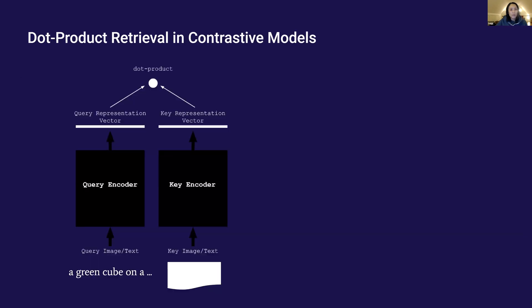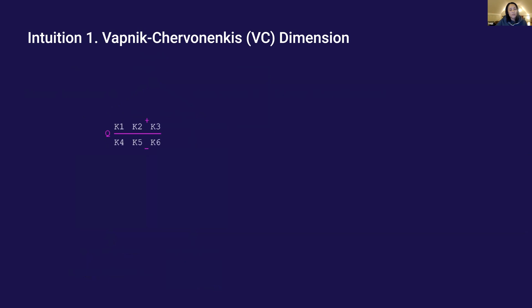My intuition for why this happens has to do with the dot product retrieval layer between query and key representation vectors in standard contrastive models. We can view this layer as performing linear classification in which a linear boundary cube is encoded to separate the key data points. Under this perspective, the VC dimension limitation applies.